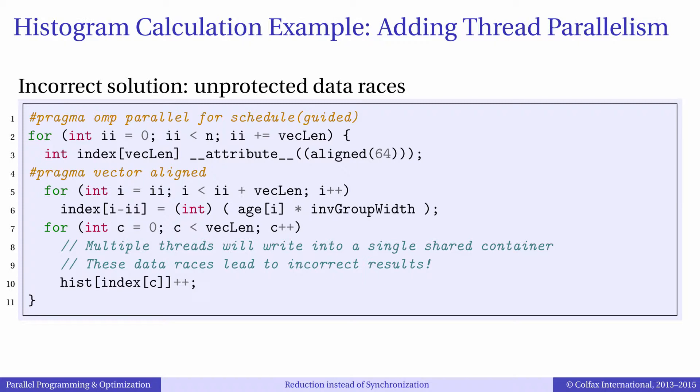Different threads are writing into the array hist, which is shared across all threads. As a reminder, this array is only five elements long — it contains the number of people in the age groups 0–20, 20–40, 40–60, 60–80, and 80–100 years. At the same time on Xeon Phi we have hundreds of threads, so we can expect numerous events where different threads read and update this array concurrently, leading to unpredictable results.